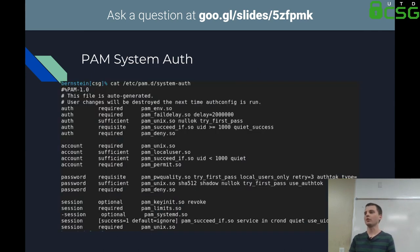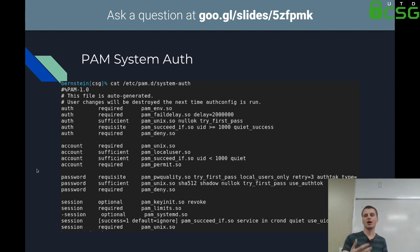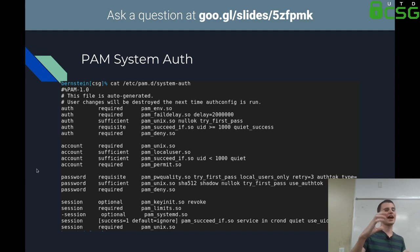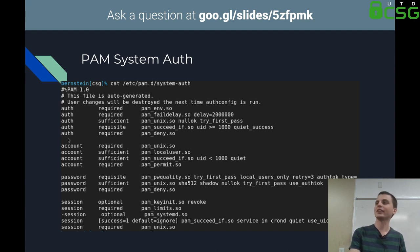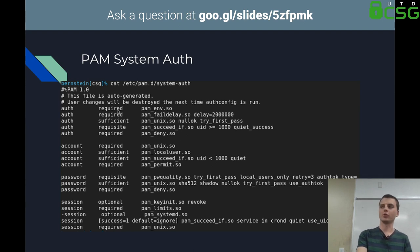An example of a PAM config: you have four different sections — Auth, Account, Password, and Session — and they're called PAM stacks. For the Auth stack, you have a handful of modules that are loaded, five here, and they have different verbs that describe how they function. When you enter the system auth PAM configuration and you're trying to auth as a user, you slowly traverse down this stack.